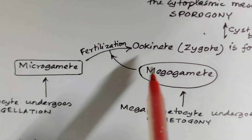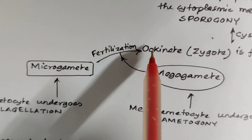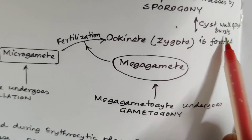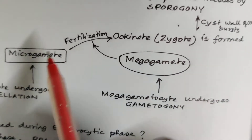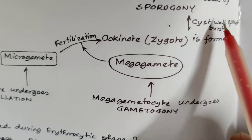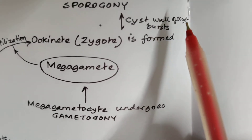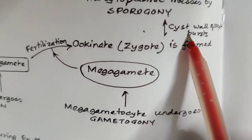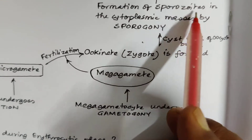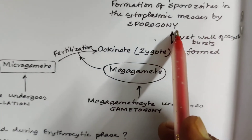Both the microgamete and megagamete undergo fertilization to form the ookinete, which is a zygote formed due to this fertilization. The cyst wall of the oocyst bursts to release sporozoites in the cytoplasmic masses by sporogony.